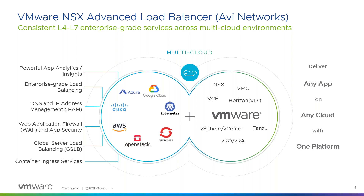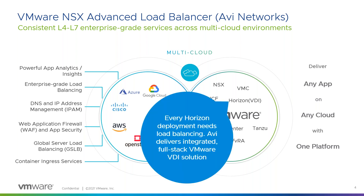Previously we had multi-cloud integrations including vSphere and NSX, and now in addition we're working on a better-together story with VMware solutions. All your Horizon deployments do need load balancing — it could be an NSX load balancer or a third-party appliance. What Avi delivers here is a full-stack VMware VDI plus load balancer solution, so you can have both the load balancer and the VDI from VMware — better support, better cost.